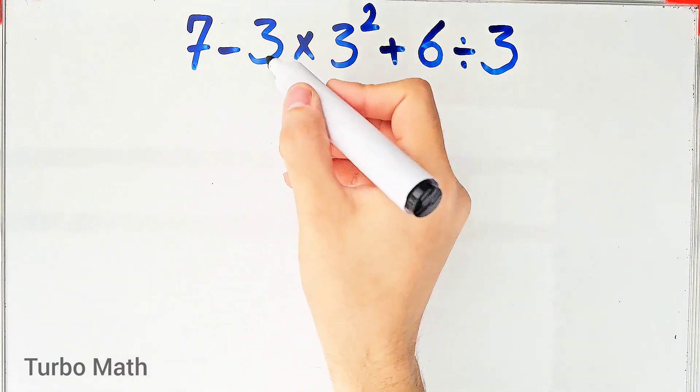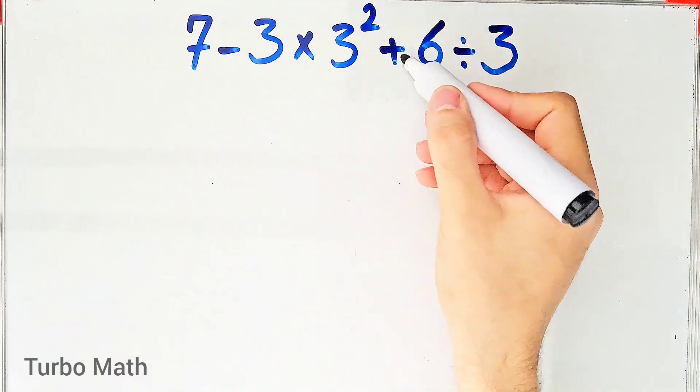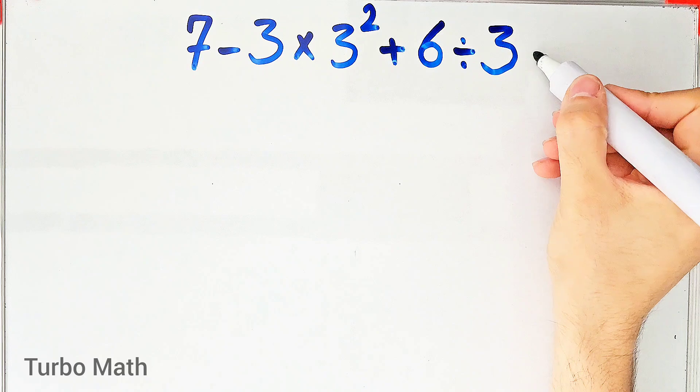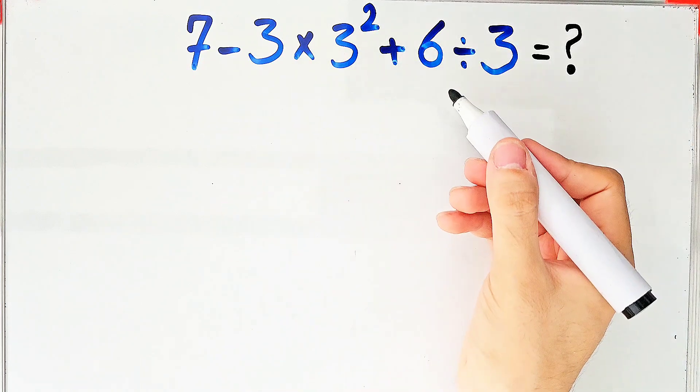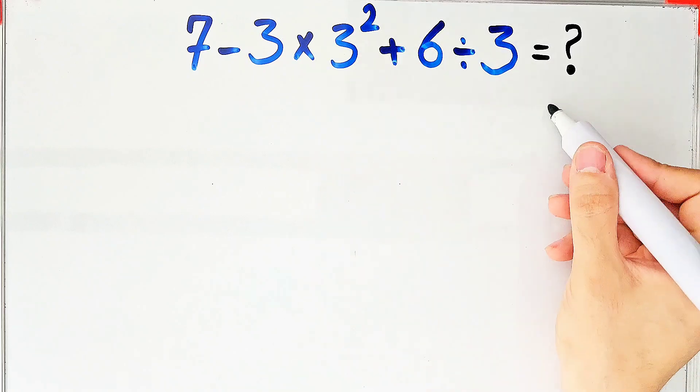Seven minus three times three to the power of two plus six then divided by three. What is the answer to this question? Can you solve it? Hi friends and welcome to Turbo Math channel. To solve this question we need to follow the order of operations.